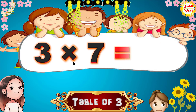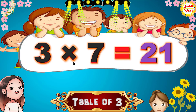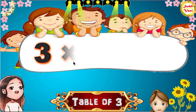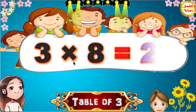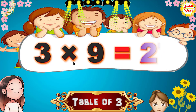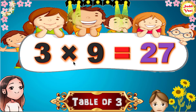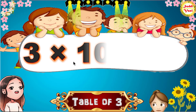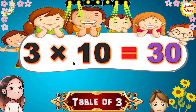3 7s are 21, 3 8s are 24, 3 9s are 27, 3 10s are 30.